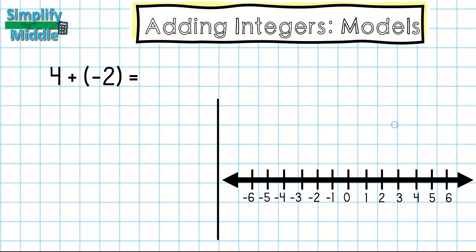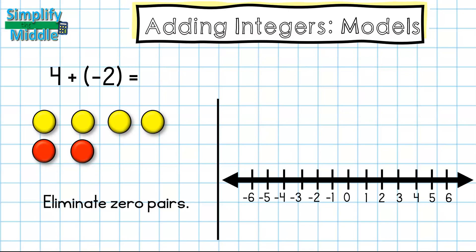If we try this again with another problem this time the second number is going to be negative. We will first count out our four yellow chips and then we're going to add to it two red chips. Remember to line up any reds and yellows you have and then eliminate zero pairs. So here I have two sets of zero pairs. I'm going to eliminate them and I end up with positive two. So that's my answer for this problem.